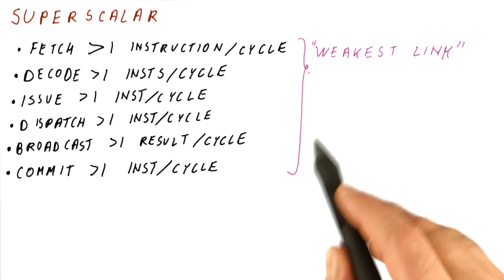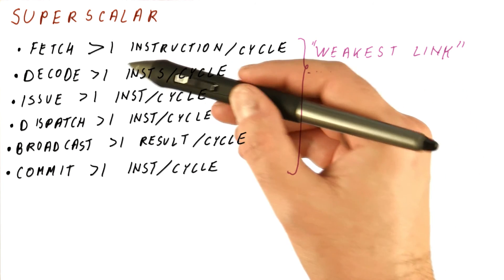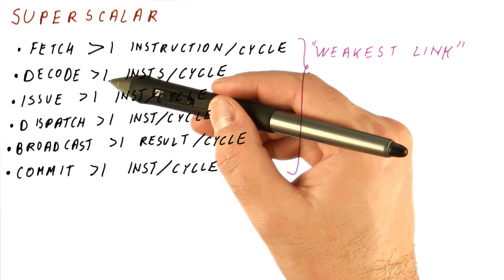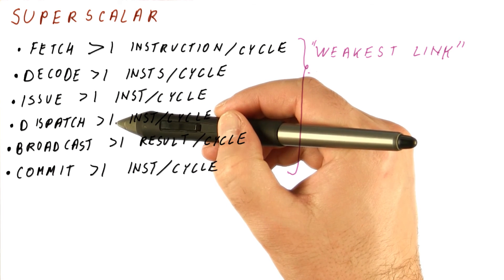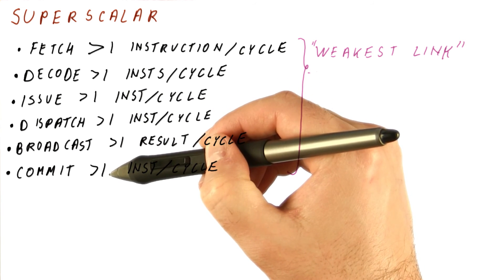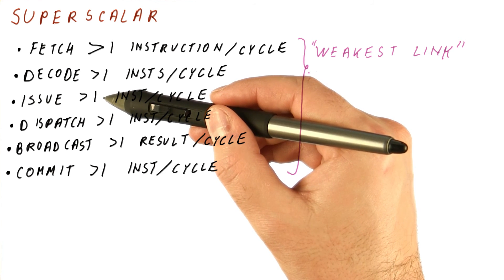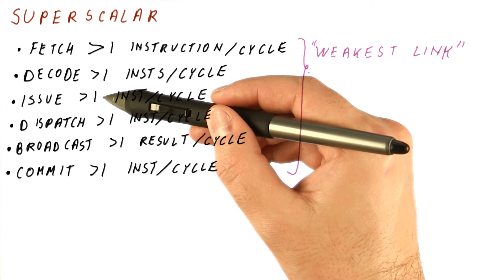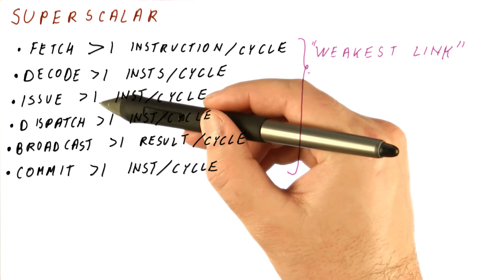And among these, we really have to be worried about the weakest link. Meaning, if we can fetch up to, let's say, four instructions per cycle, decode up to four instructions per cycle, issue only one per cycle, dispatch up to four, broadcast up to four, and commit up to four, we will still be limited by the issue of only one. So on average, we can never produce more than one instruction finishing per cycle and committing because simply they have to go through issue one at a time.